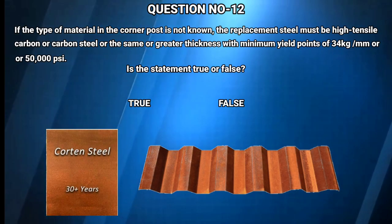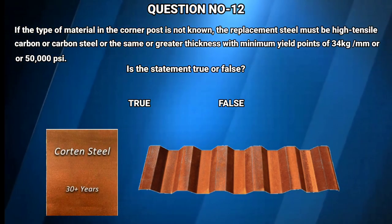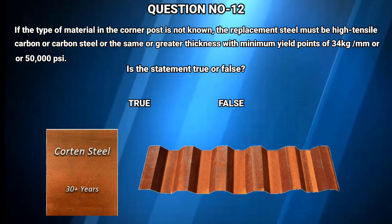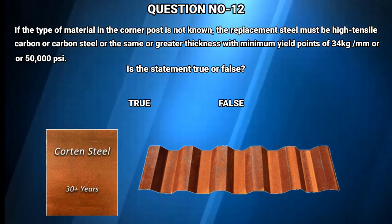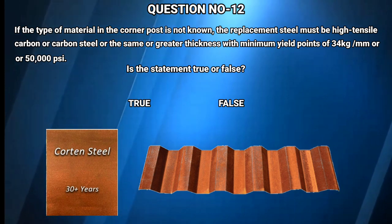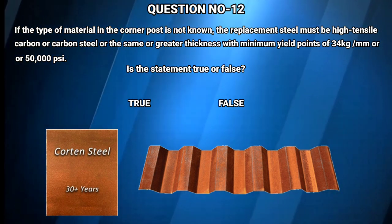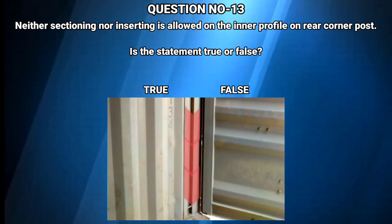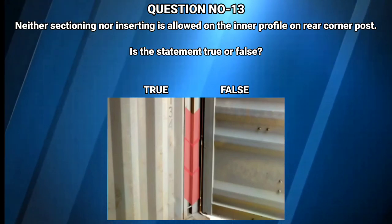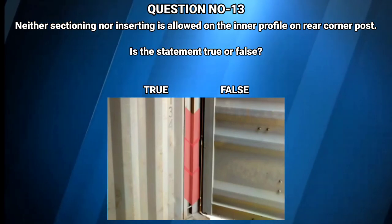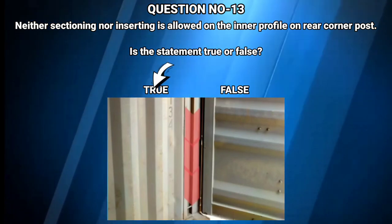Question number 12: If the type of material in the corner post is not known, the replacement steel must be high tensile carbon or carbon steel, of the same or greater thickness, with minimum yield points of 34 kg/mm² or 50,000 pounds per square inch. Is the statement true or false? The answer is true. Question number 13: Neither sectioning nor inserting is allowed on the inner profile of the rear corner post. Is the statement true or false? The answer is true.